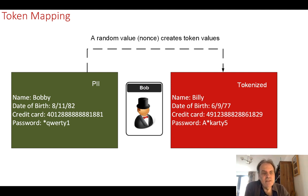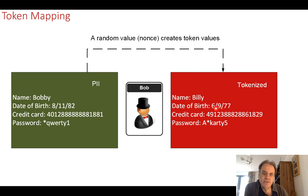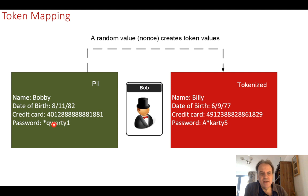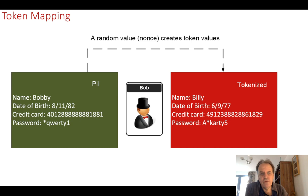What we need is a token mapping system. An efficient way to do this is to create a random nonce and then take the data and convert it into tokenized data which has the same type of format as the original token. In this way our existing systems can still check for details such as having a 4 at the start of a Visa credit card or a certain character set for a password. This is called format-preserving encryption, and it doesn't actually use the complex encryption we see with AES, but more of a mapping function.